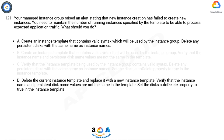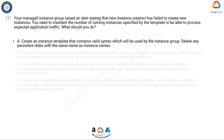The correct answer is A. To address the issue of failed new instance creation in a managed instance group while maintaining the desired number of running instances, the following steps should be taken. First, create an instance template with valid syntax. It is important to ensure that the instance template contains valid syntax, as any syntactical errors can cause failures during instance creation. By creating an instance template with valid syntax, you ensure that instances can be created successfully.